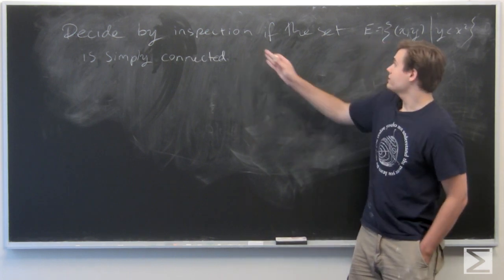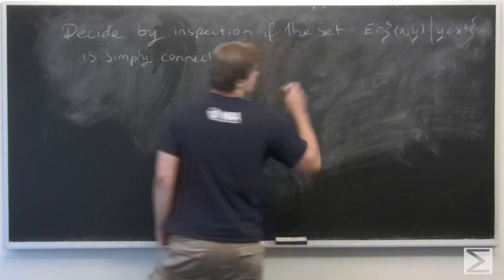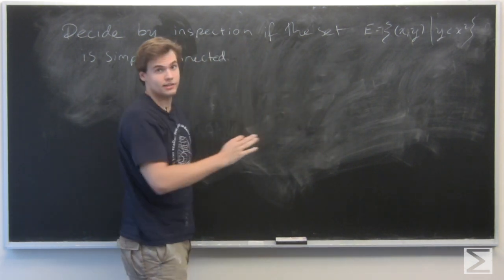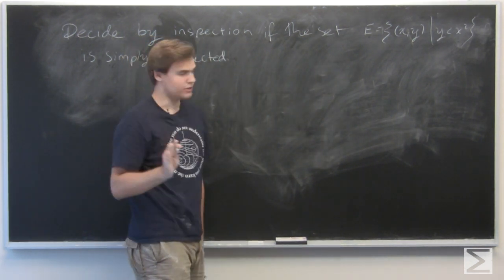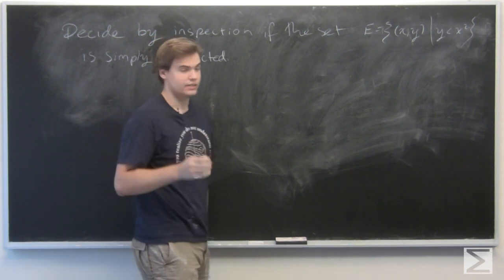In this problem, we're given a subset of R2, E, consisting of the points (x, y) such that y is less than x squared. And we want to determine by inspection if this set is simply connected or not.